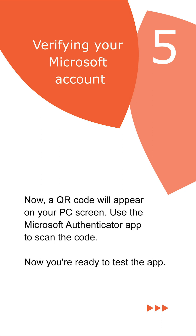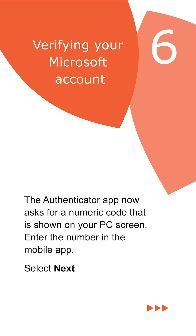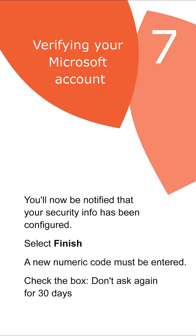A QR code will appear on your PC screen. Use the Microsoft Authenticator app to scan the code. The Authenticator app will then ask for a numeric code shown on your PC screen — enter the number in the app and select Next. You will be notified that your security info has been configured. Select Finish, enter a new numeric code, and check the box 'Don't ask again for 30 days'.